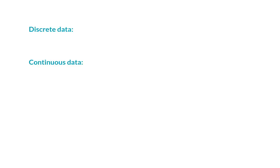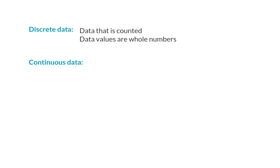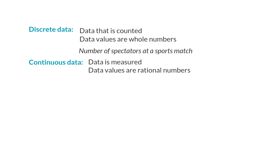The data that is collected can be classified in two ways: either discrete or continuous data. Discrete data is data that is counted and therefore can only be whole numbers. Continuous data is data that is measured, and these data values can be any rational number. An example of discrete data is the number of spectators at a sports match, and continuous data can be the heights of the players.